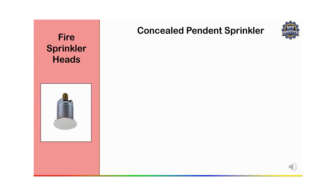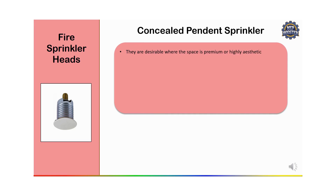The next type is the concealed pendant sprinkler. Concealed sprinklers are installed within a cover plate or ceiling tiles and remain hidden until activated. The cover plate falls away when the sprinkler head is activated. They are desirable where the space is premium or highly aesthetic. Concealed pendant heads are recessed into the ceiling, mounted with a decorative cover that blends with the ceiling, and maintain a clean ceiling line, hiding the sprinkler head until needed. This type is suitable for aesthetically sensitive environments.